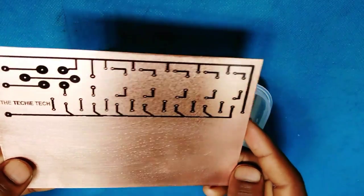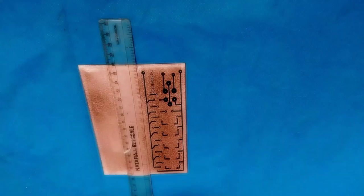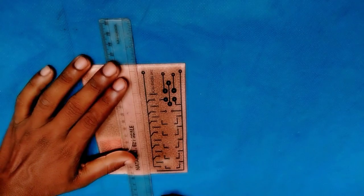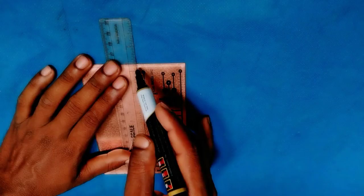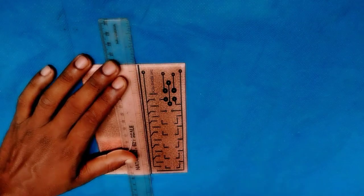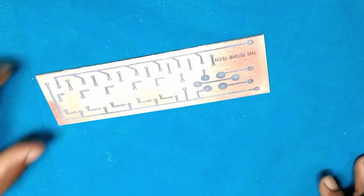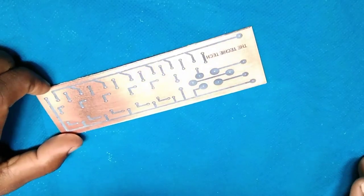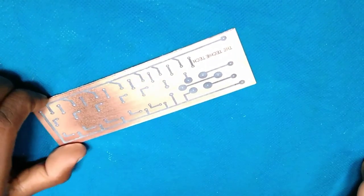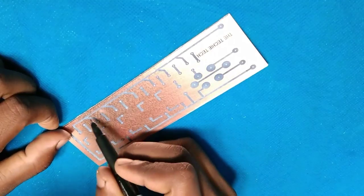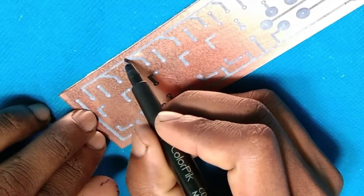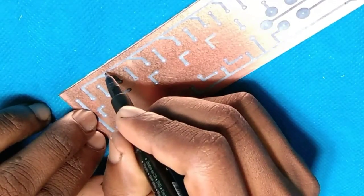You can see the printed design on the clad board. If there is extra space on your board, you can cut it out. Here we will cut out the remaining board, for that we are marking it with marker. Now we will inspect the circuit board for printing errors. There may be printing defects caused by improper press or during peeling off the paper. If there is any error, correct it by drawing with marker.